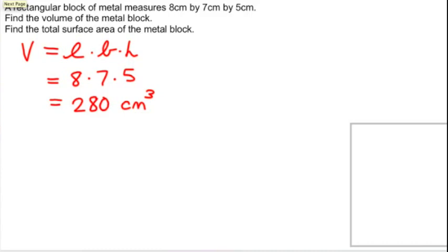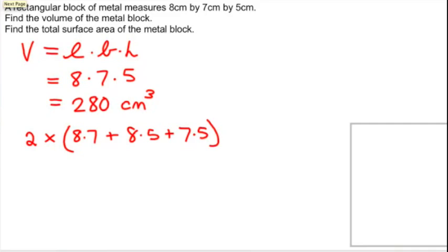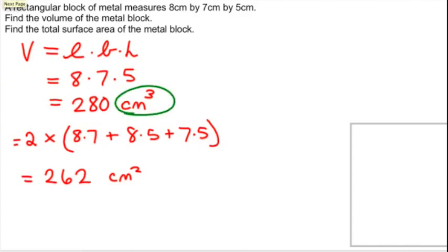Now let's find the total surface area of the metal block. Thinking about the net, we're going to have twice the sum of 8 times 7, plus 8 times 5, plus 7 times 5. That gives us 262 square centimeters. Remember: volume is cubic centimeters, surface area is square centimeters.